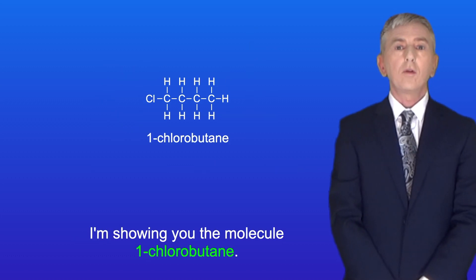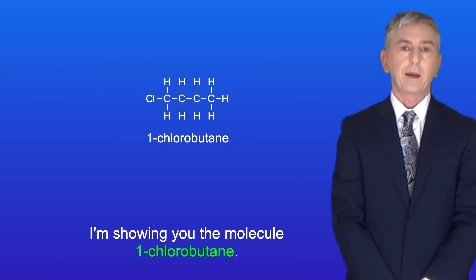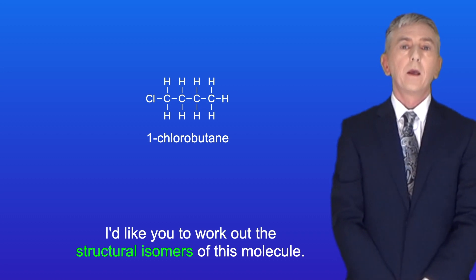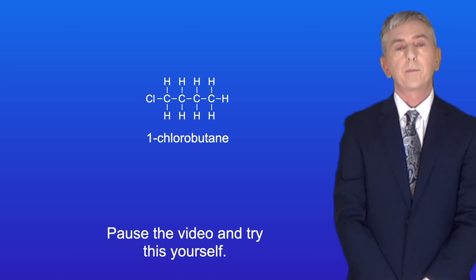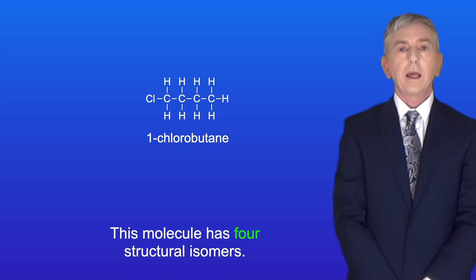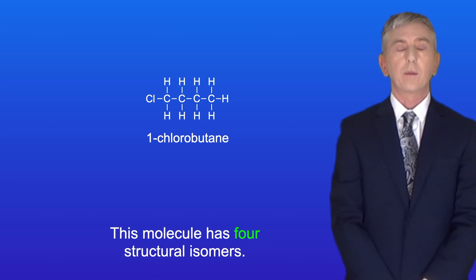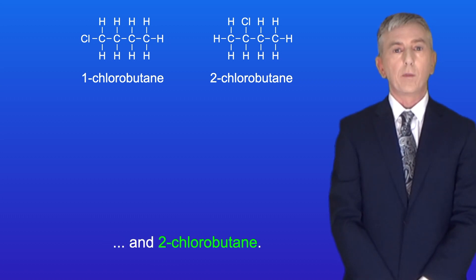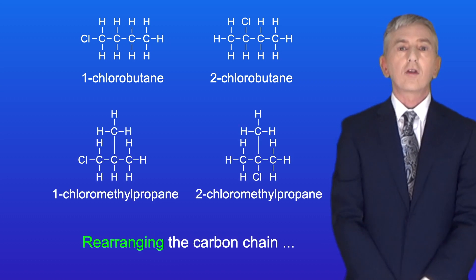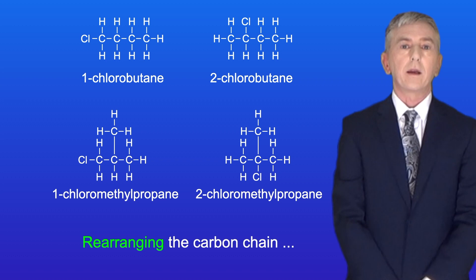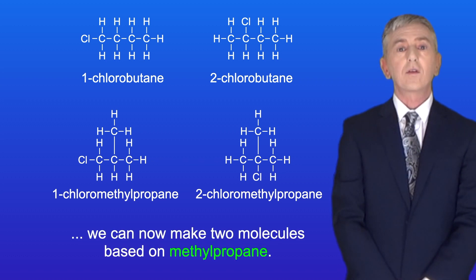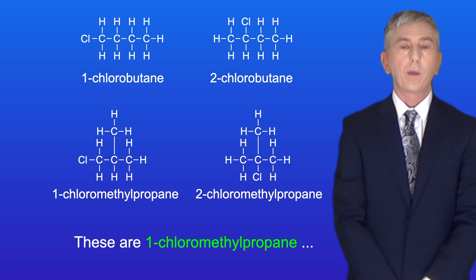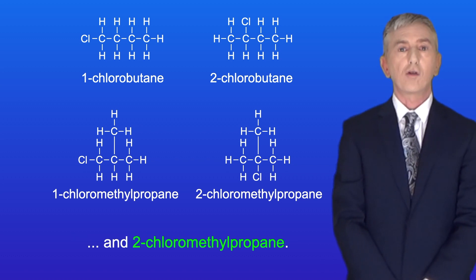Here is the molecule 1-chlorobutane. Work out its structural isomers — pause the video and try this yourself. This molecule has four structural isomers: 1-chlorobutane and 2-chlorobutane. Rearranging the carbon chain gives two molecules based on methylpropane: 1-chloromethylpropane and 2-chloromethylpropane.